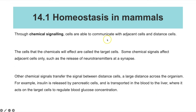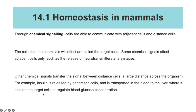Through chemical signaling, cells are able to communicate with adjacent cells but also cells that are really far away. The cells that the chemicals will affect are called target cells. We're going to be looking at target cells linked to controlling the water potential of the blood and the blood glucose concentration. Some chemical signals affect adjacent cells only, such as neurotransmitter release at the synapse, but other chemicals have signals that transfer between distant cells across the organism — for example, insulin released by pancreatic cells is transported in the blood to the liver where it acts on liver cells to regulate blood glucose concentration.